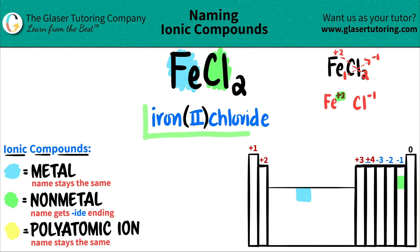And that is it! FeCl₂ is iron(II) chloride. Thank you so much for viewing the video, I really hope this has helped. Let me know in the comments — love talking to you guys. If you want to help us out, please press the subscribe button. Good luck on all your future tests and quizzes. I will see you in the next lesson.